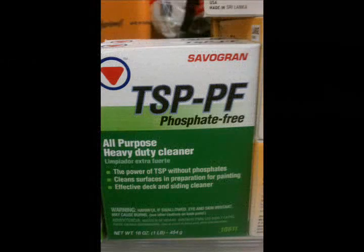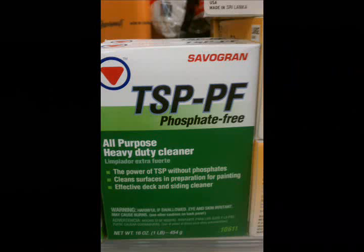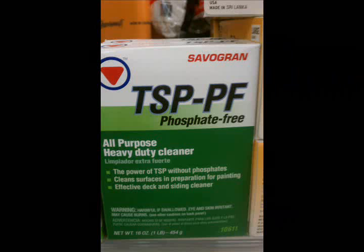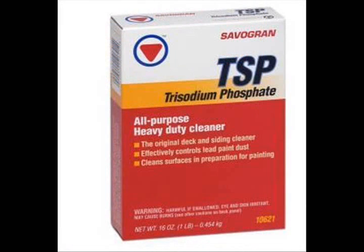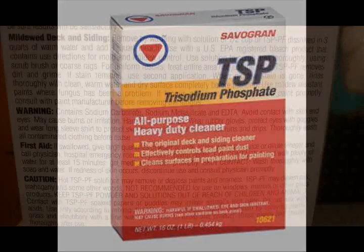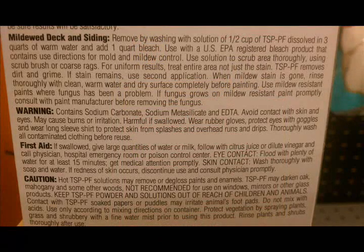The first chemical we are going to look at is trisodium phosphate, the phosphate-free version. There are two versions: trisodium phosphate and trisodium phosphate PF, which is phosphate-free. Regular TSP is difficult to obtain now because phosphates are more controlled due to environmental impact. We are going to look at the back of the TSP box.